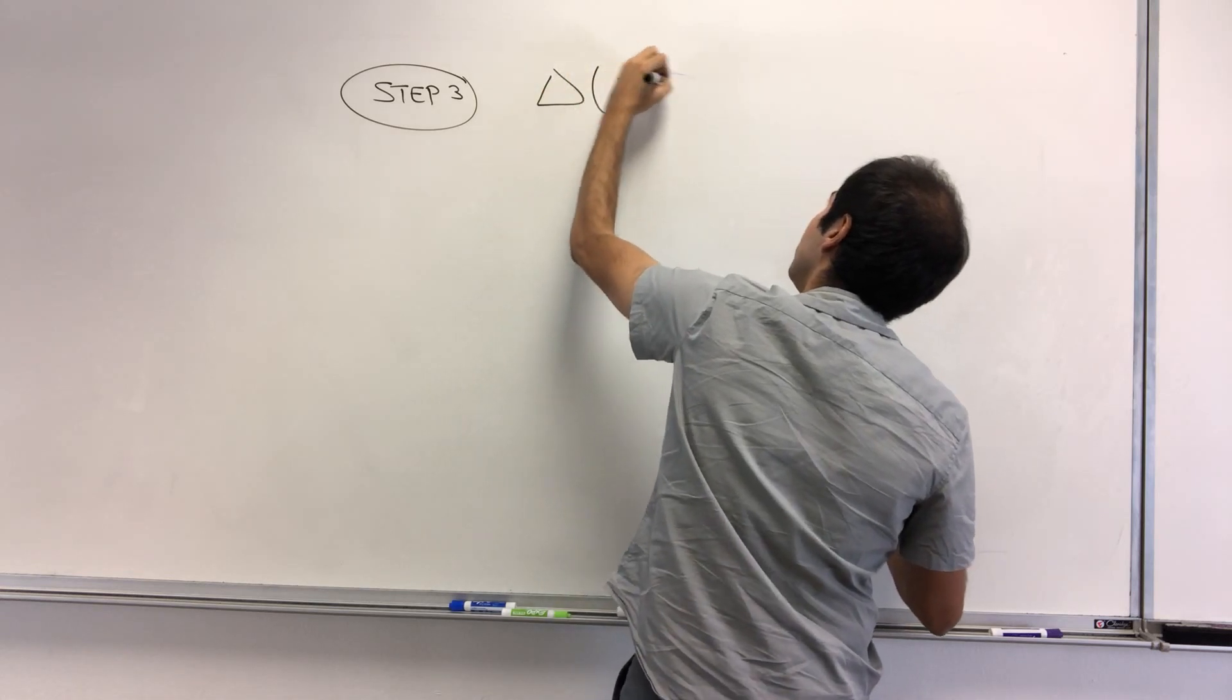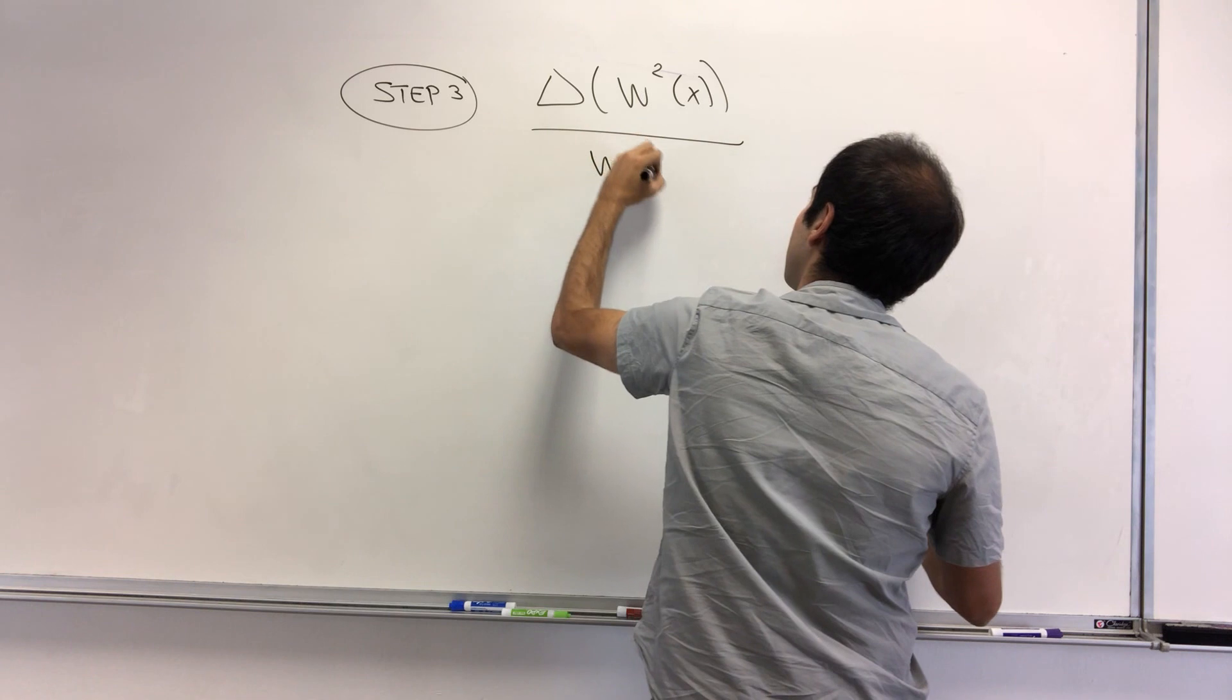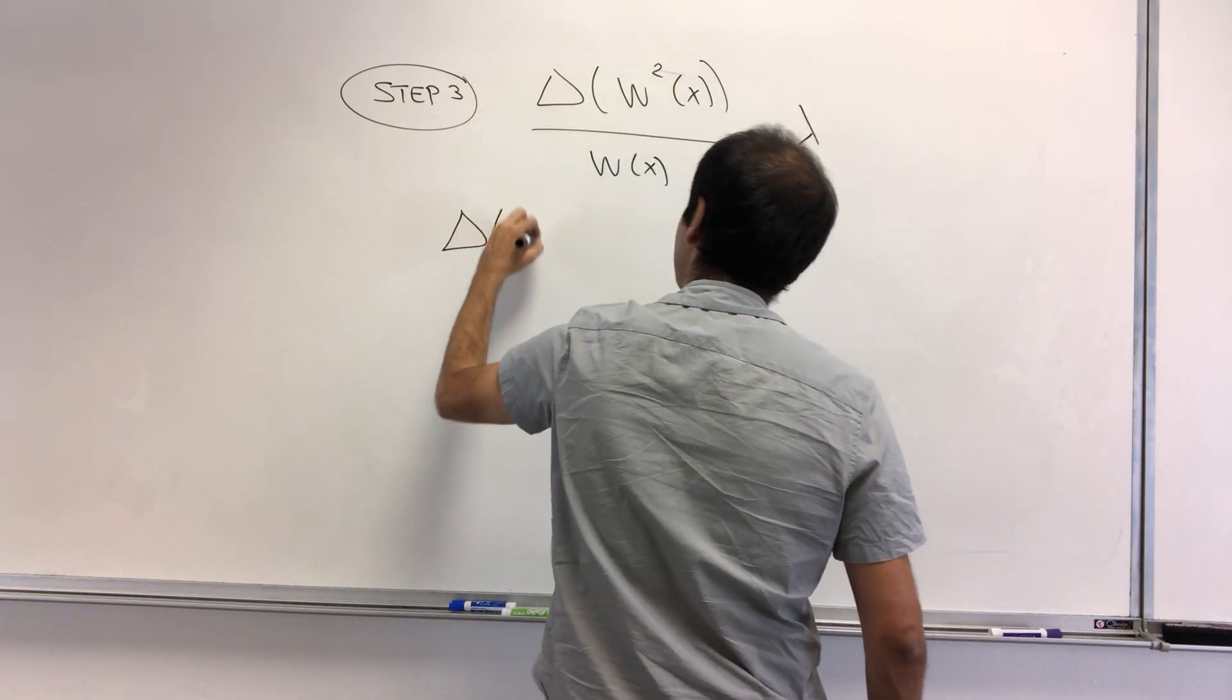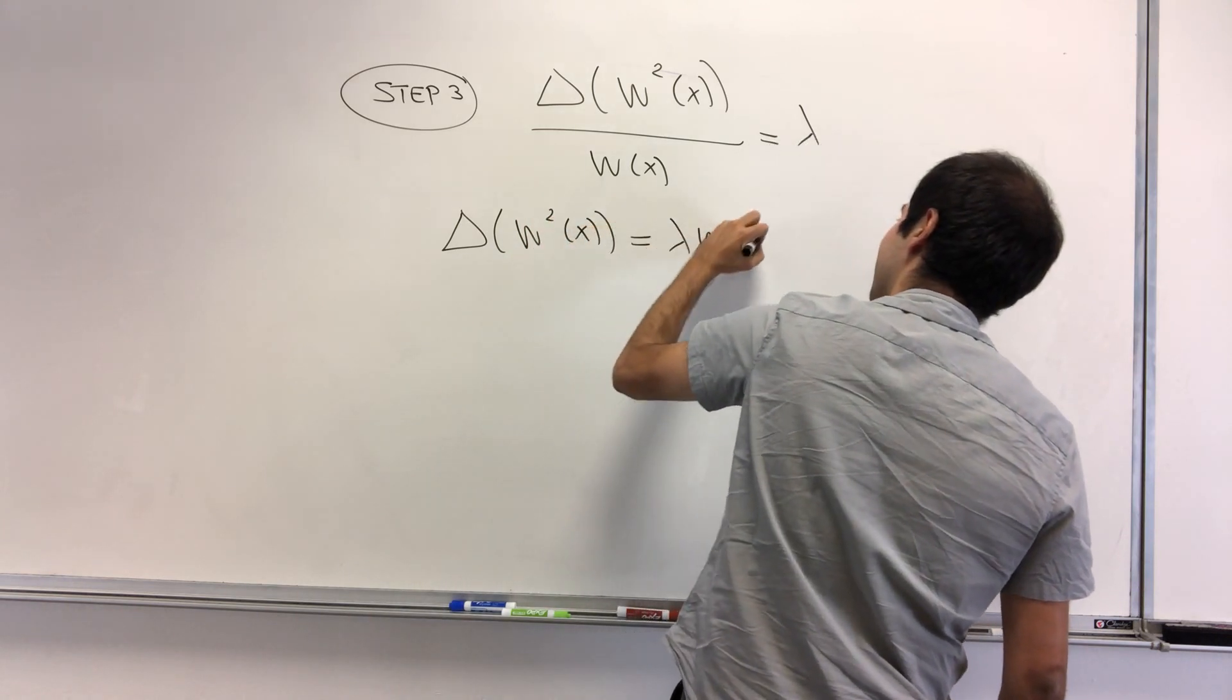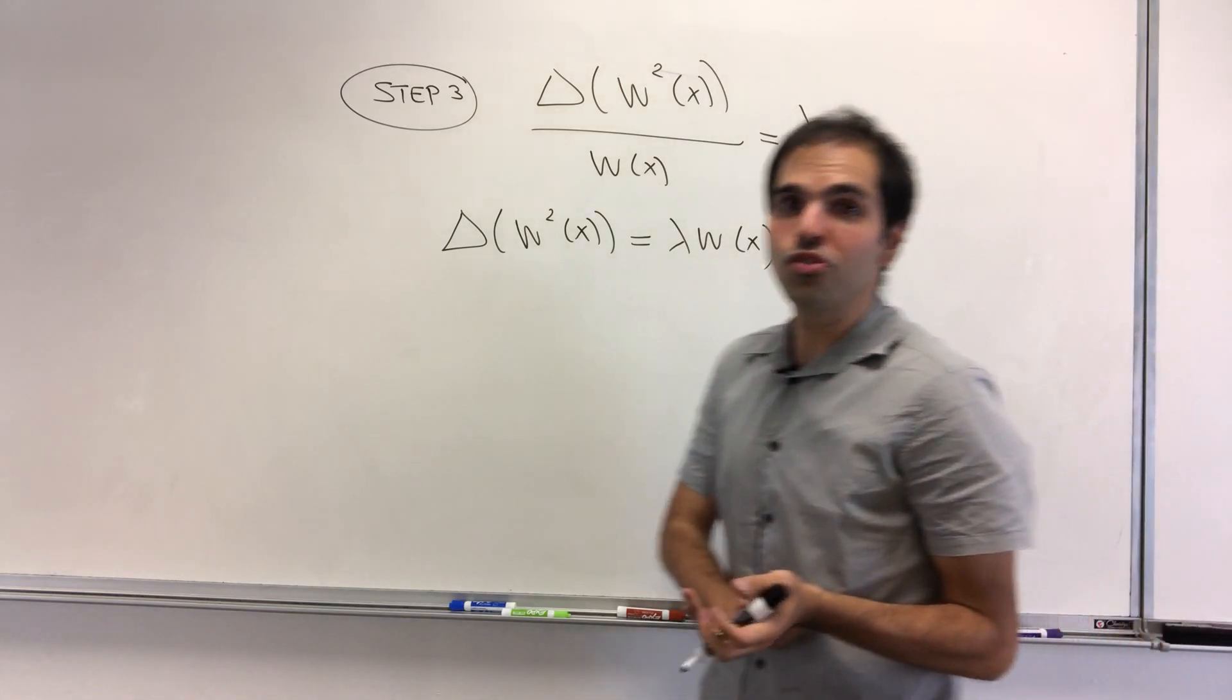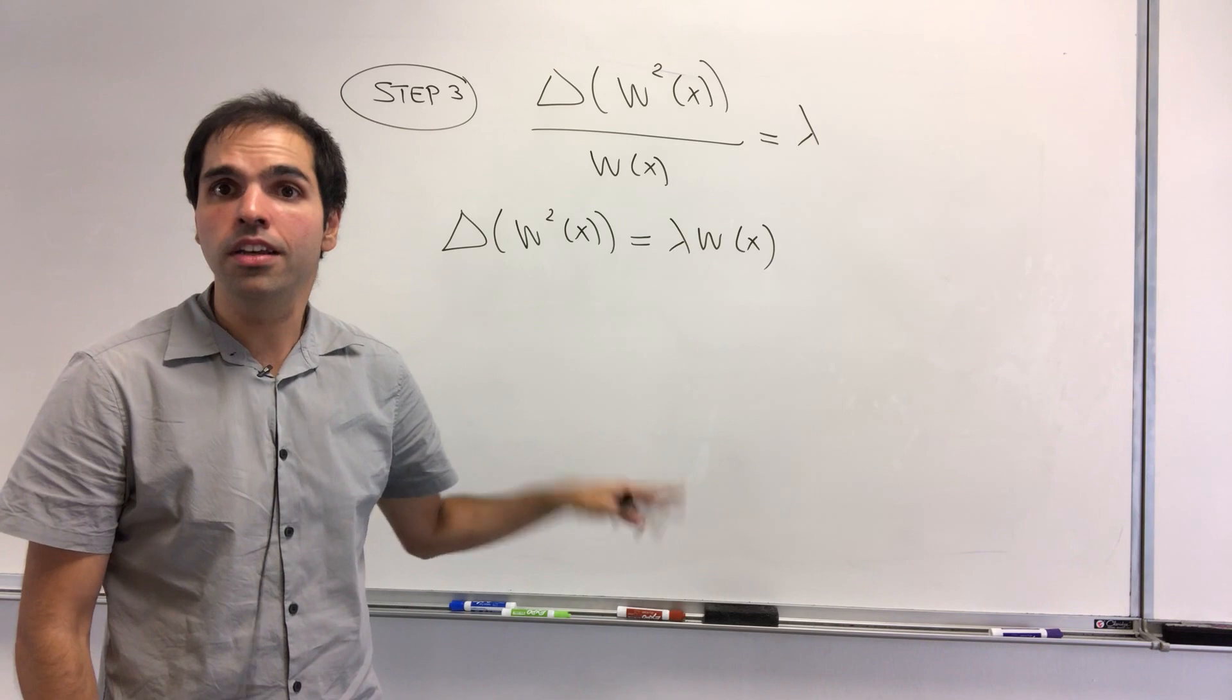Okay, now Laplacian of w squared of x over w of x equals lambda, and then Laplacian of w squared of x equals lambda w of x. And here, again, as is usual for PDEs, here we just want to find one solution.